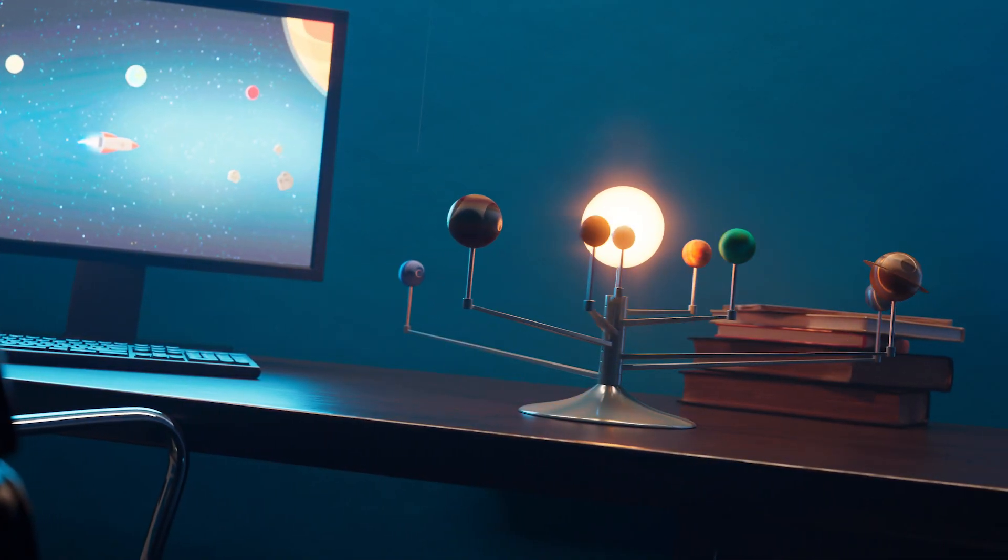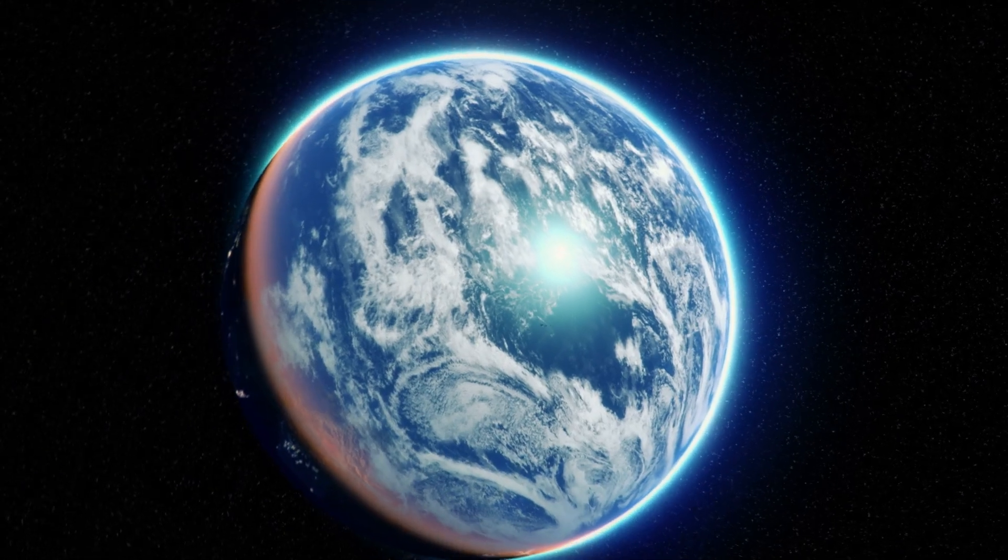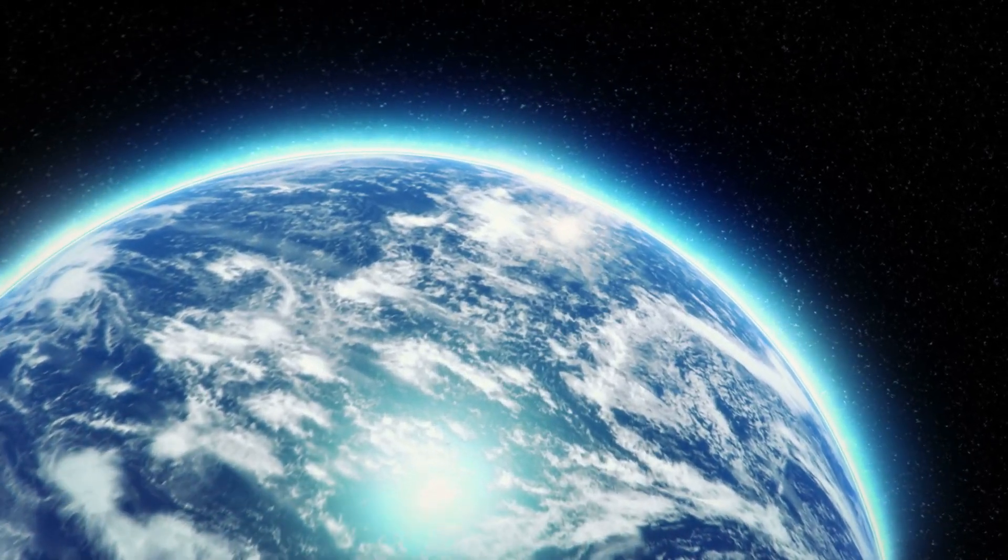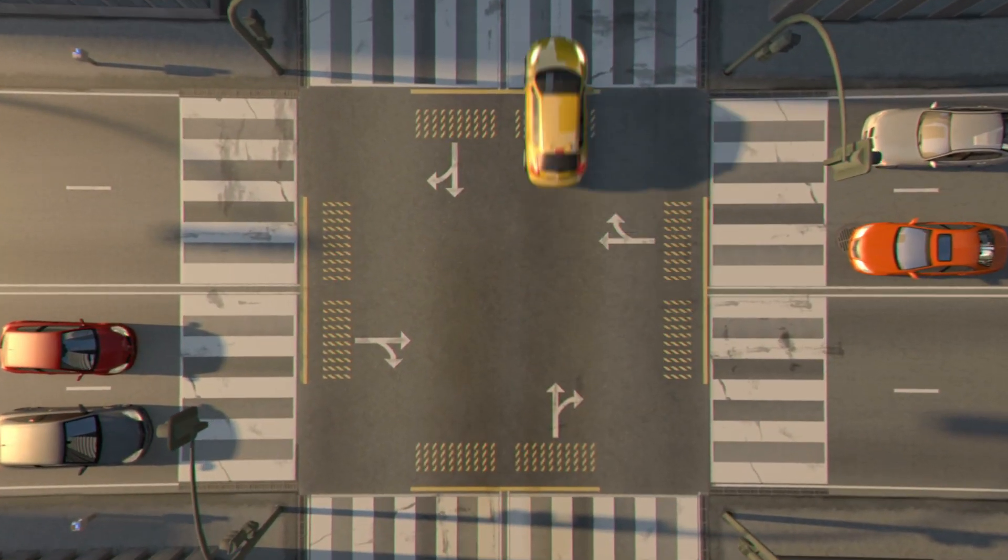These planets formed far enough away from the sun to be able to incorporate frozen water easily. Earth not only contains water in its oceans and atmosphere, but it also has the equivalent of multiple oceans of water trapped within its deep inner rocks.